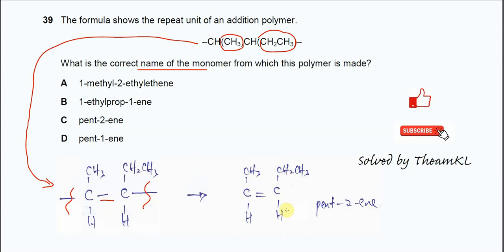When you remove the tails and add the double bond, you get this monomer, this alkene. The name of this alkene is, because this one is 5 carbon: 1, 2, 3, 4, 5. So 5 carbon and the double bond on the second carbon. This is pent-2-ene.